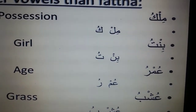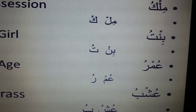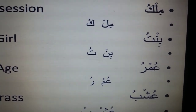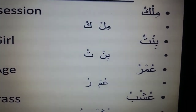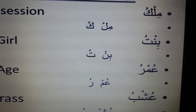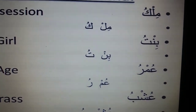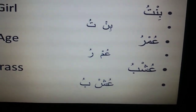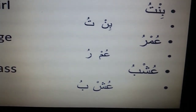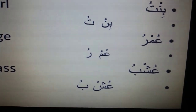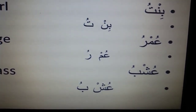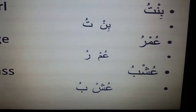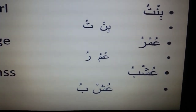The second word is bintu, meaning 'girl'. It consists of ba, nun, and ta. Ba with a kasra gives 'bi', nun with a Sukun gives 'n', so 'bin'. Ta with a dhamma gives 'tu', so bintu. The third example is umru, meaning 'age'. It consists of ayn, meem, and ra. Ayn with a dhamma gives 'u', meem with a Sukun gives 'm', so 'um'. Ra with a dhamma gives 'ru', so umru.